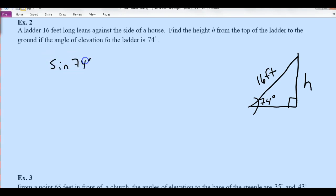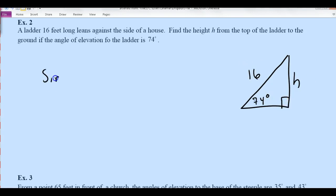So sine of 74 degrees is going to be the height over 16. If you multiply both sides by 16, which is 16 times the sine of 74 degrees. Please make sure that you're in degree mode in your calculator.